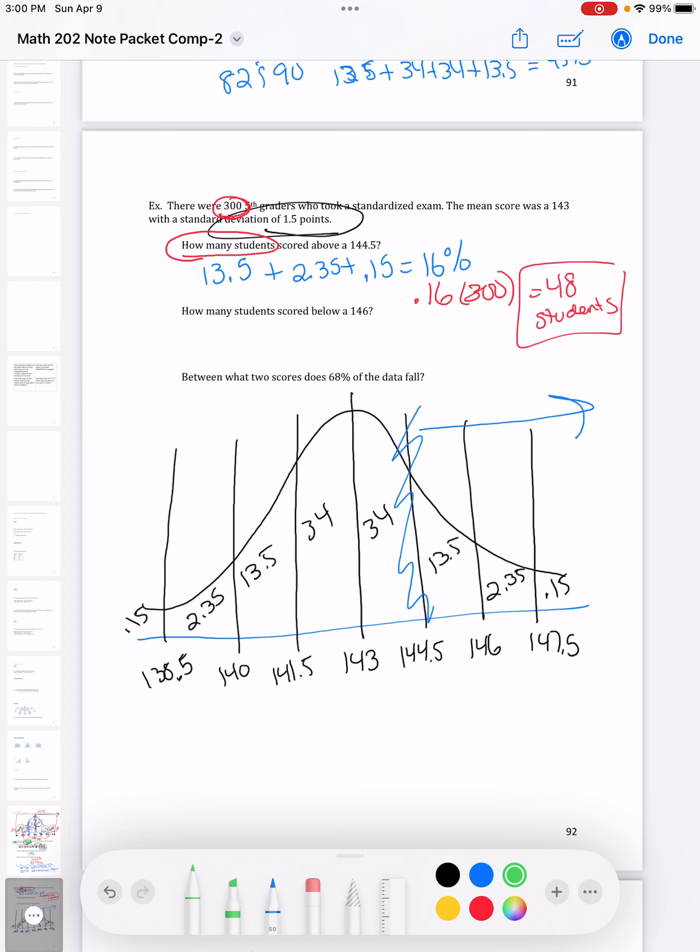Similar, below 146, there's 146. I want all of those below, so that's a lot that I have to add up. So if I add all that up, I get 97.5%. Since it did ask how many, I'm going to take that percent and multiply it by the 300 students. This one kind of gives me a weird answer. It doesn't say anything about rounding, so I'm just going to leave it 292.5.